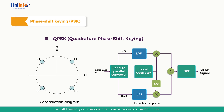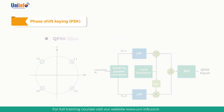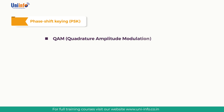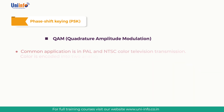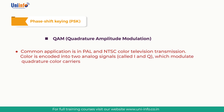QAM (quadrature amplitude modulation) is a method in which two signals are used to amplitude-modulate two carriers that are in quadrature — that is, 90 degrees out of phase with each other. The two modulated signals are then combined. A common application is in PAL and NTSC color television transmission, where color is encoded in two analog signals called I and Q, which modulate quadrature color carriers. Modems also use this approach to increase data bandwidth or trade bandwidth for error rate and noise immunity.